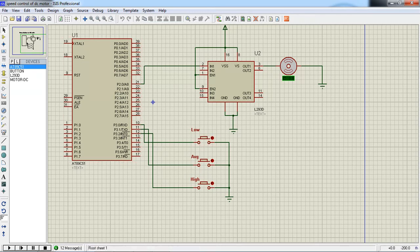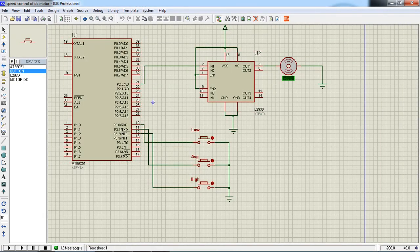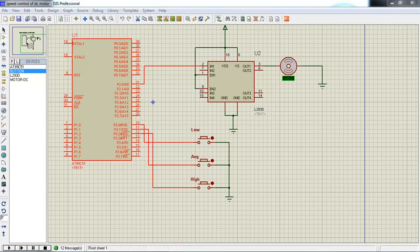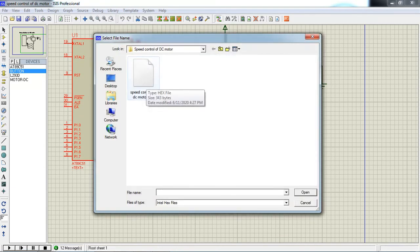These three buttons I connected with P3.0, P3.1, and P3.2. Just take your proper components from library by clicking on this P symbol. Do your hardware connections: VCC, ground, and motor. The other terminals of buttons, you need to connect with ground. Now you need to link your hex file, which is developed in Keil MicroVision IDE. This is my hex file.